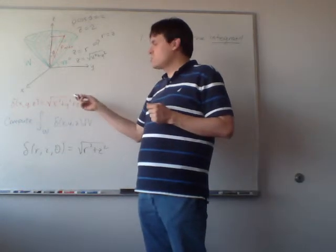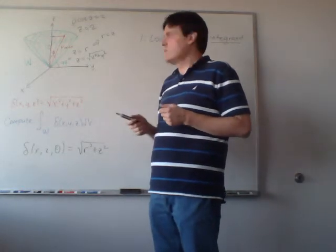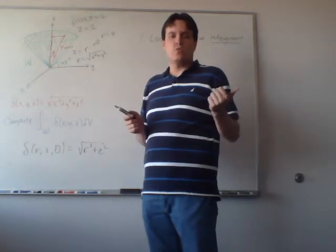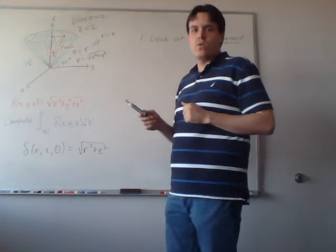If this had been just square root of x squared plus y squared without the z squared, that would have been the distance from the z-axis, and cylindrical probably would have been a much more natural choice. So that's the first thing to look for.